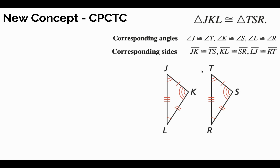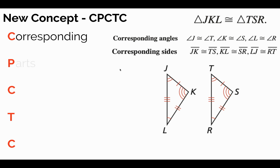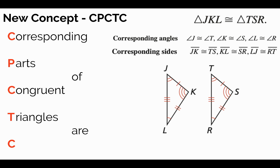Here's our new concept: CPCTC. CPCTC is actually just an acronym, and it stands for corresponding parts of congruent triangles are — that's right — congruent. Let's see who can say that the fastest. You're going to race with me. On your mark, get set, go: corresponding parts of congruent triangles are congruent. Did you beat me? I hope you did.